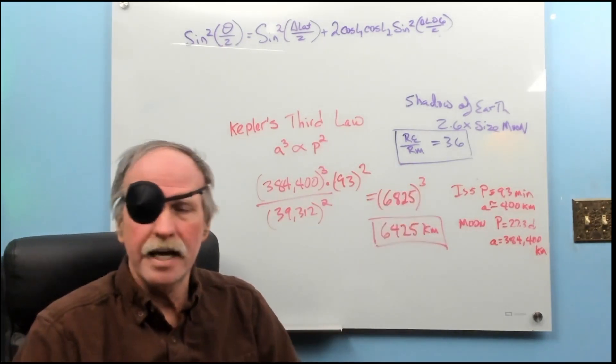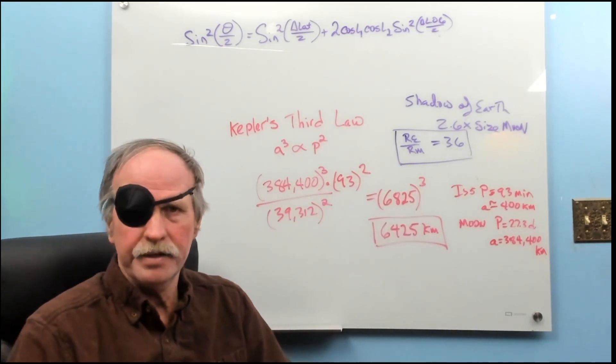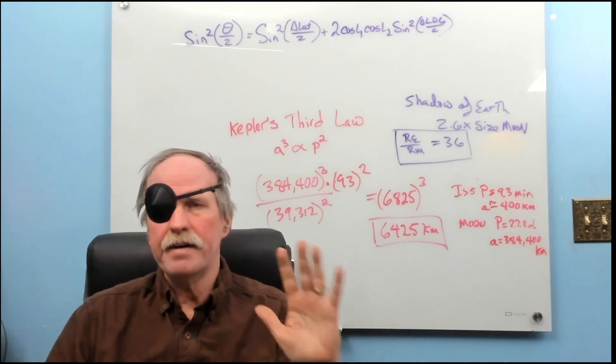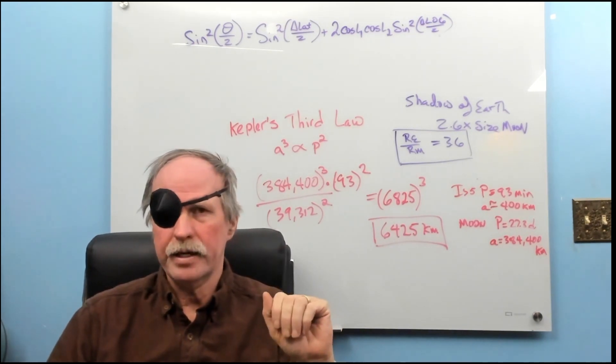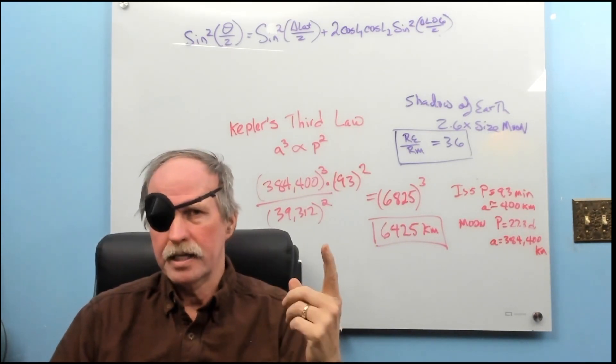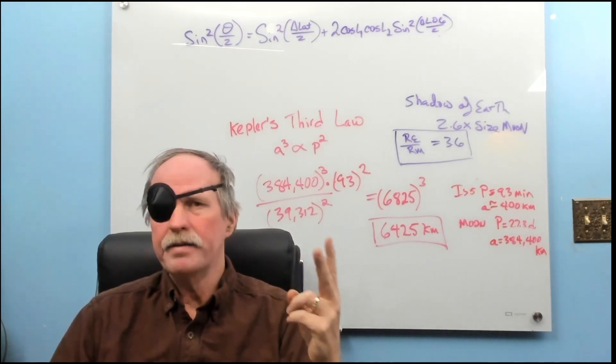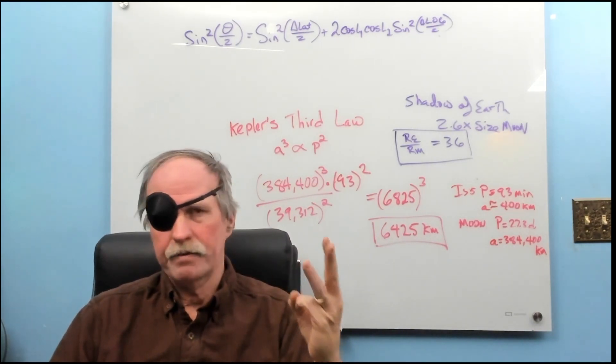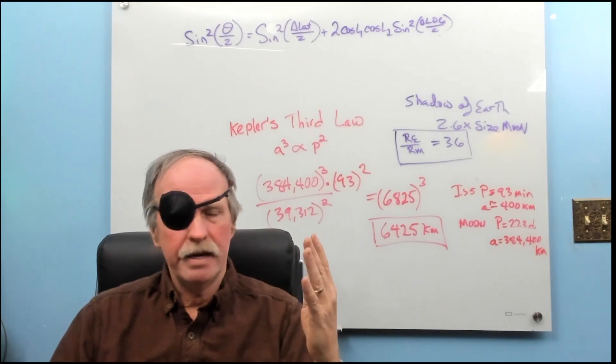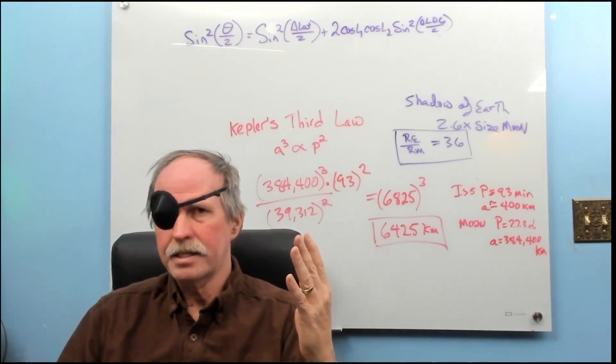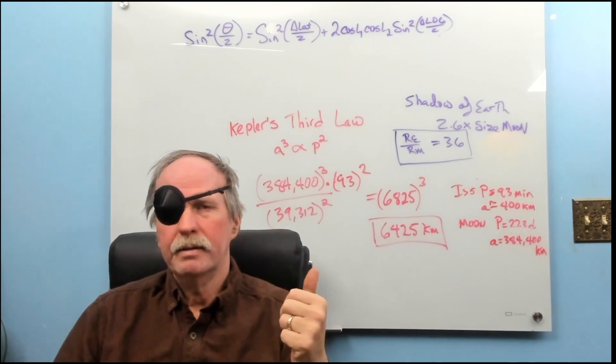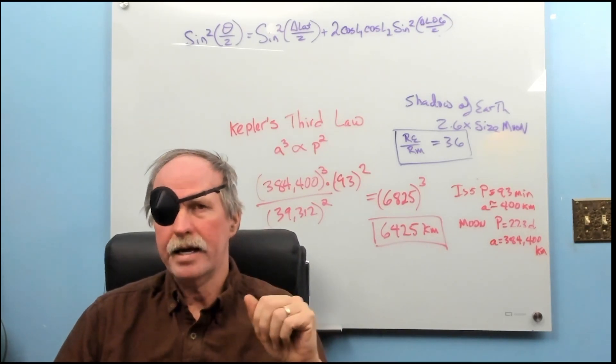So, not only do the ancients have it, the folks in the Renaissance have it as well. So, now we have five ways of determining the radius of the Earth. We have Eratosthenes. We have Alberuni. We have Great Circles. We have Aristarchus and the distance from the Earth to the Moon. And then we have Kepler, looking at the orbital period of the ISS.